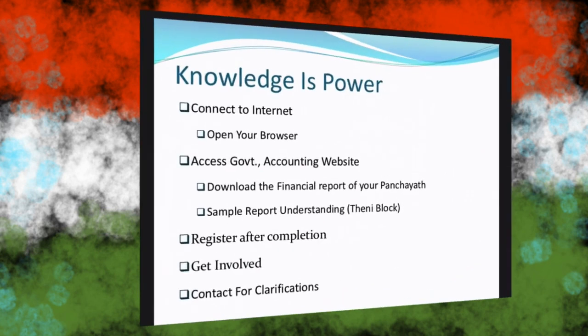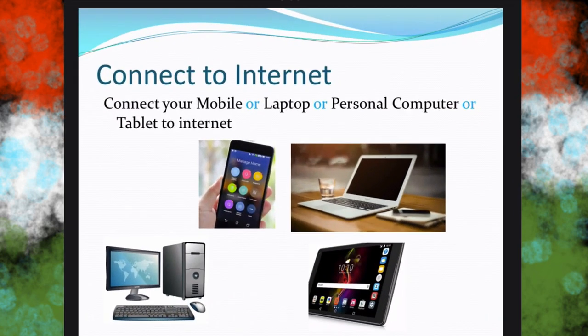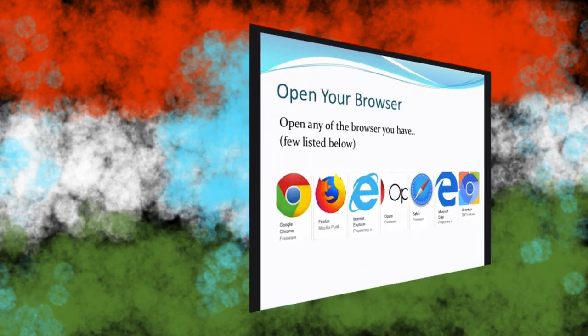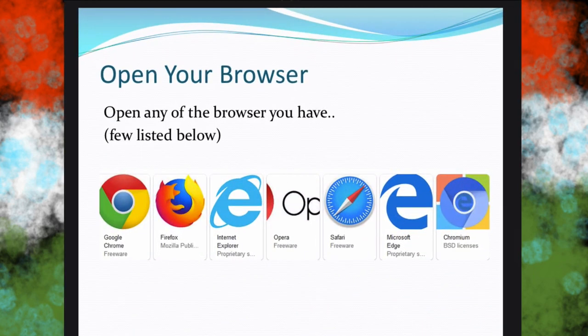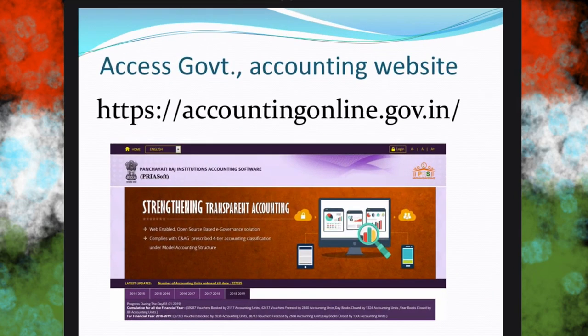Today we are going to understand from the basics. First, connect to your internet either on your mobile, laptop, desktop, or tablet. Then you can open any browser to access the website from which we are going to see our panchayat financial report. The website address is https://accountingonline.gov.in.